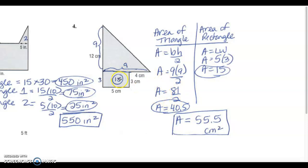My rectangle was five times three. Length times width is fifteen. When I add together forty point five plus fifteen I get fifty five point five centimeters squared for the total area.